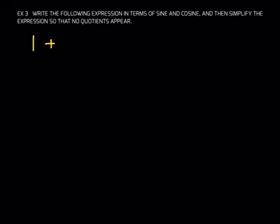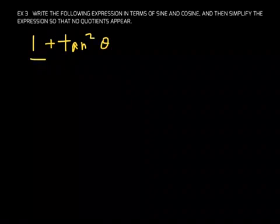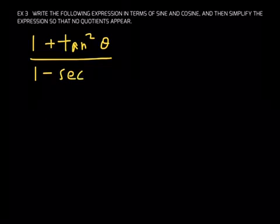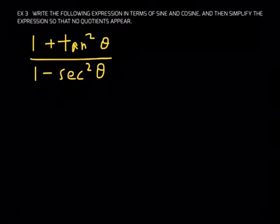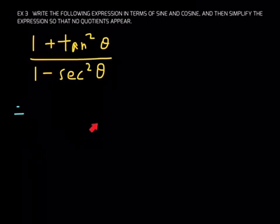The next example — and actually the last example for this section, it's a very short section — is the following: write the expression in terms of sine and cosine, and then simplify so that no quotients appear. The given expression is (1 plus tangent squared of theta) over (1 minus secant squared of theta). I'm going to change color so you can see the given expression, and then my work will appear in a different color.